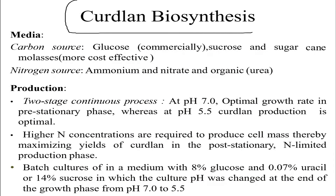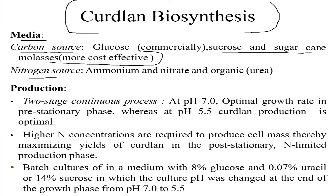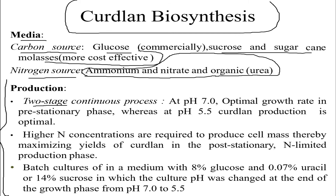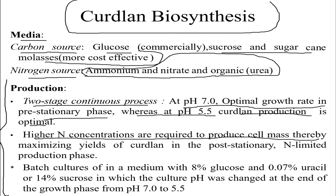For curdlan biosynthesis, glucose remains the primary carbon source, with sucrose from molasses serving as a more cost-effective additional source. A nitrogen source is required — ammonium, nitrate, or organic nitrogen — unlike some previously discussed EPS. Production is a two-stage continuous process: optimal growth occurs at pH 7 in the pre-stationary phase, while curdlan production is optimal at pH 5.5. Higher nitrogen concentrations are required to produce cell mass, maximizing curdlan yields in the post-stationary, nutrient-limited phase.